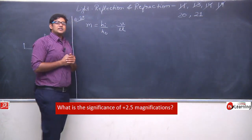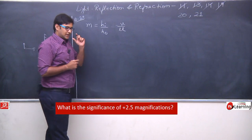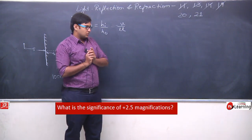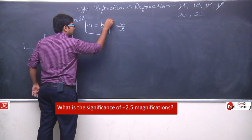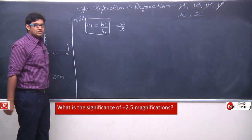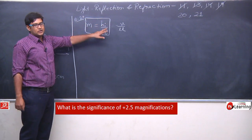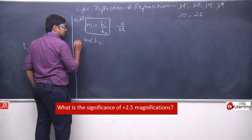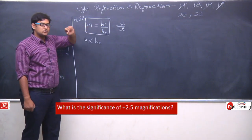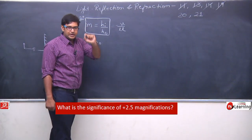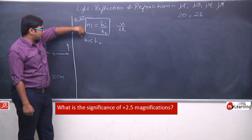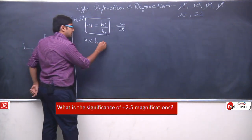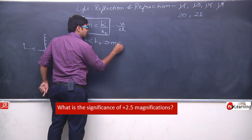Let us try to understand it from the formula. First we will see what the magnitude of the magnification value means, and then we will come to the sign convention. Magnification m equals height of image upon height of object. If height of image is less than height of object, then the image is diminished. For example, if height of image is 2 cm and height of object is 5 cm, then magnification is less than 1, meaning the image is diminished.